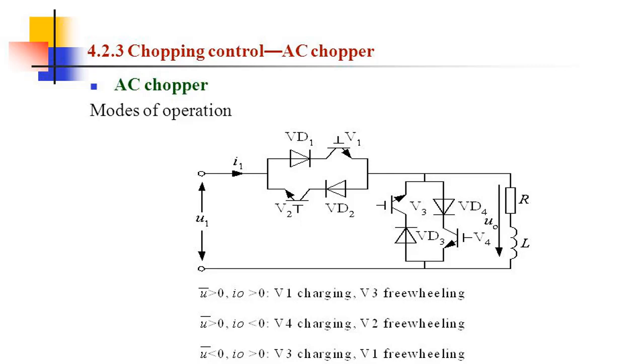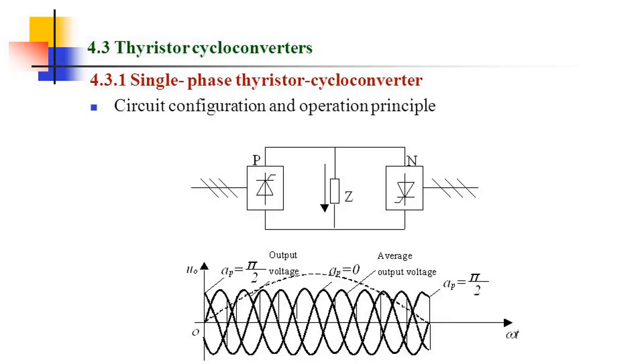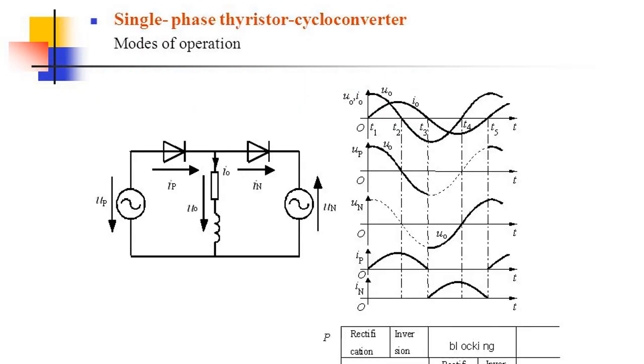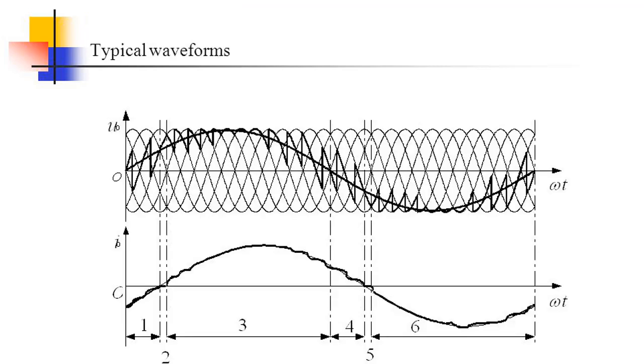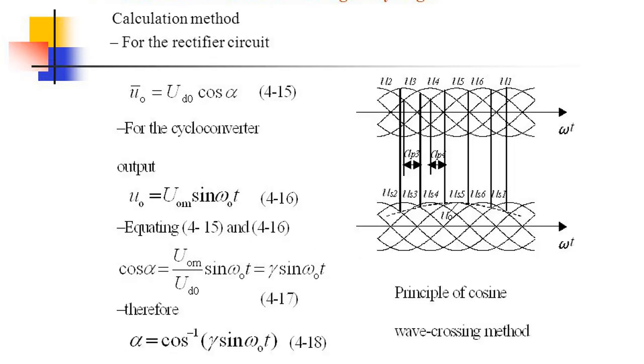4.3 Thyristor Cycloconverters. 4.3.1 Single Phase Thyristor Cycloconverter. Circuit configuration and operation principle, single phase thyristor cycloconverter modes of operation, typical waveforms. Modulation methods for firing delay angle calculation method for the rectifier circuit.